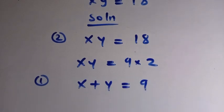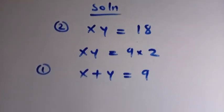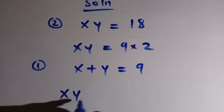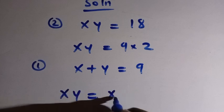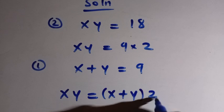Then in this equation 2, we have 9 here. Let's replace this 9 with x plus y. So by doing that, we have xy equals x plus y multiplied by 2.